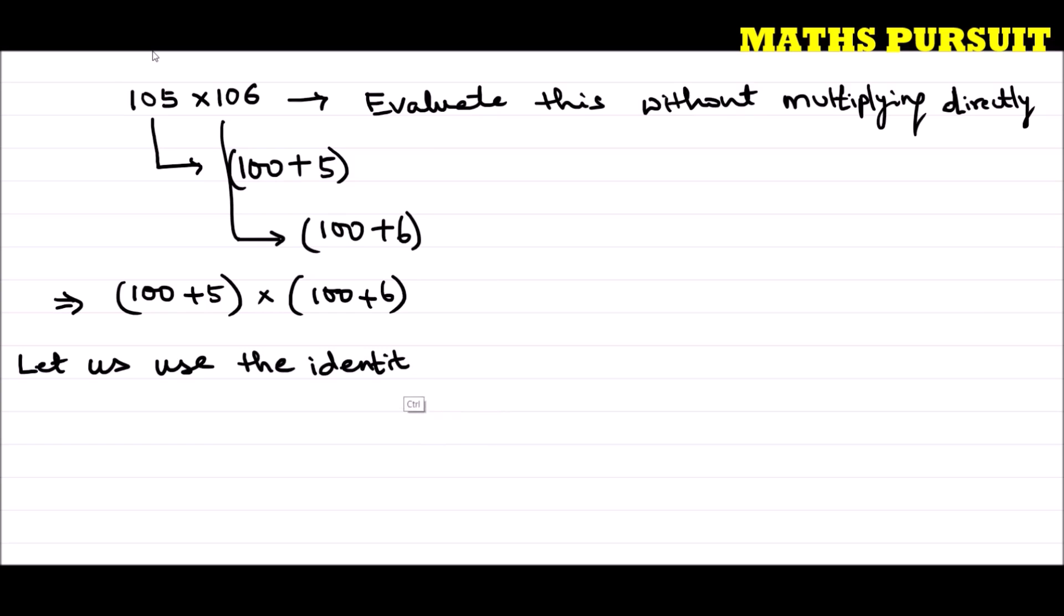Which identity are we going to use? We are going to use the identity: (x + a)(x + b) = x² + (a + b)x + ab.